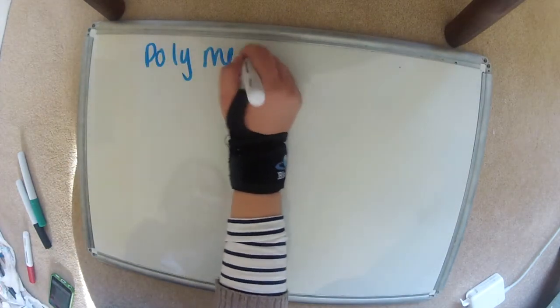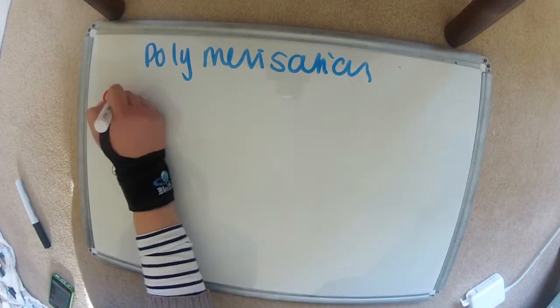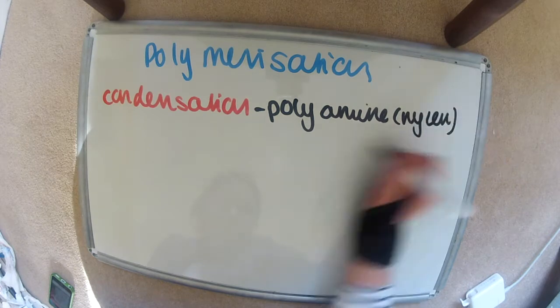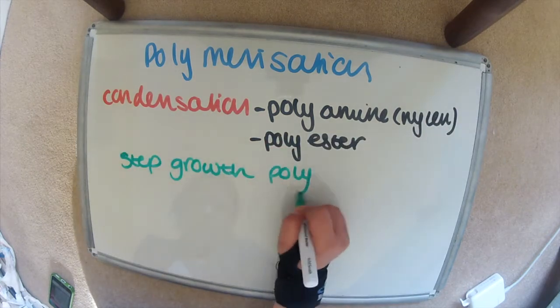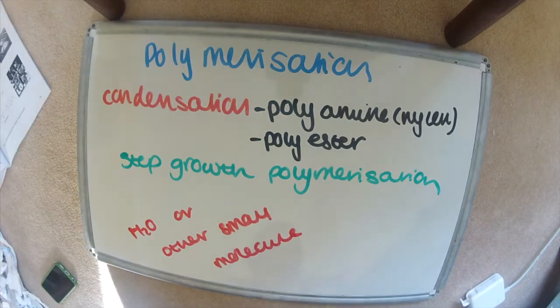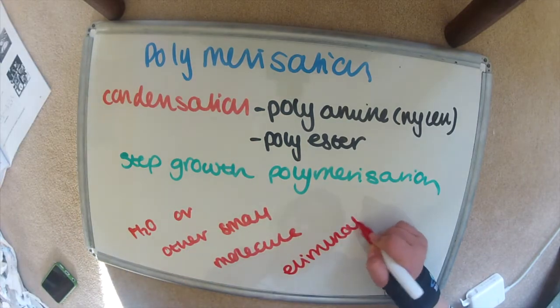Now the other type of polymerization is condensation polymerization, and this is things like polyamides and polyesters. In these cases, a small molecule of water or something similar like potentially HCl is eliminated as the polymer is formed.